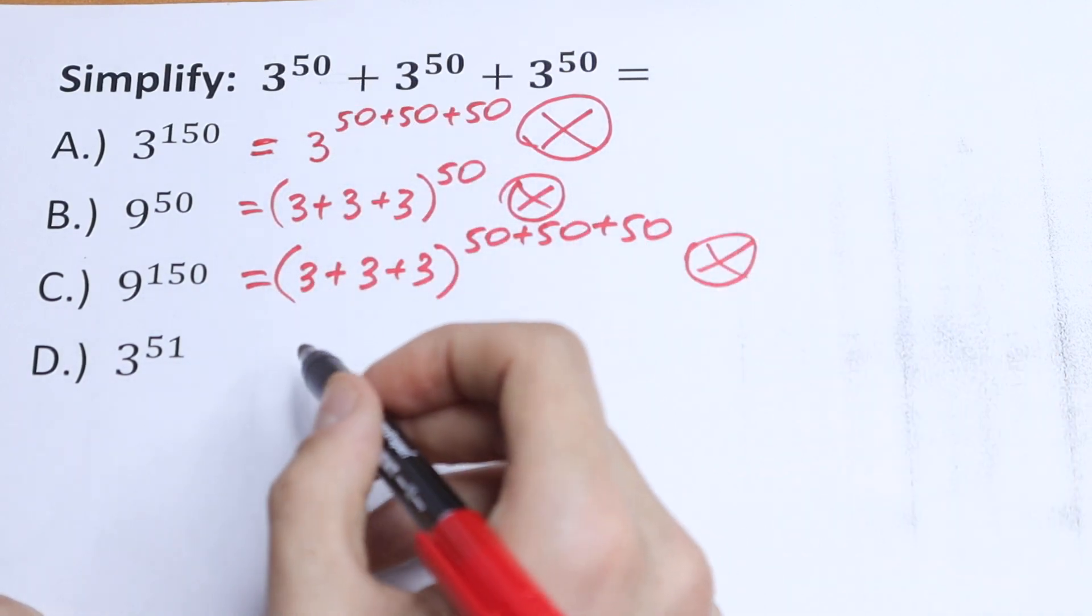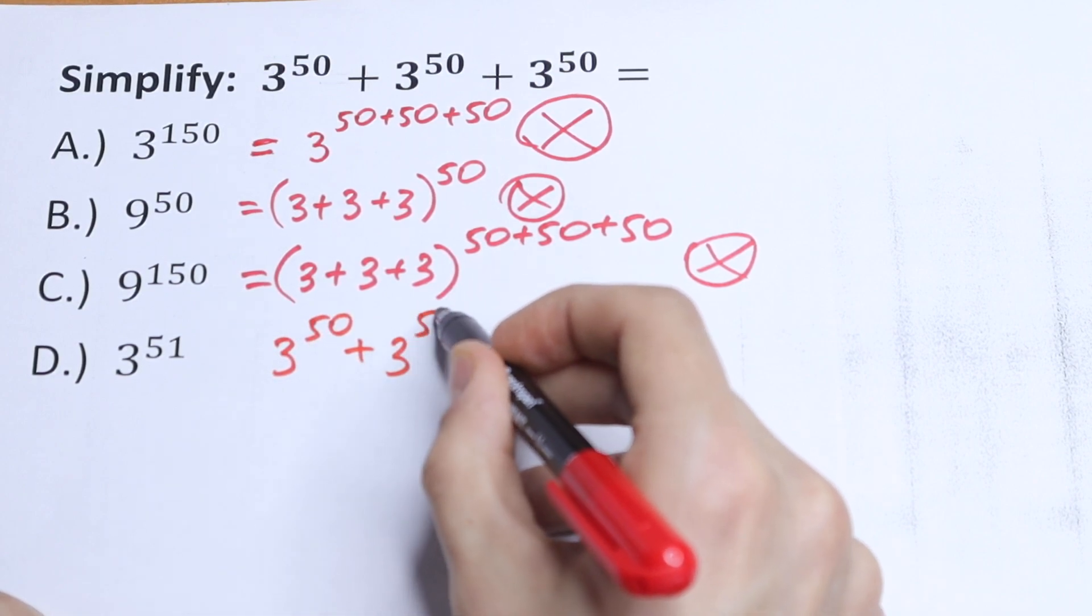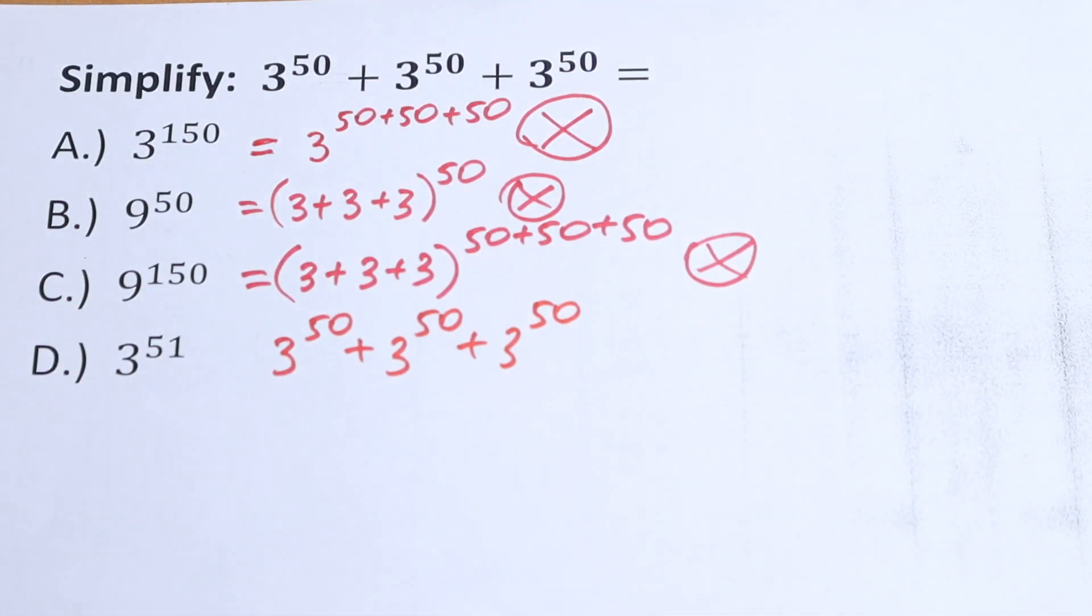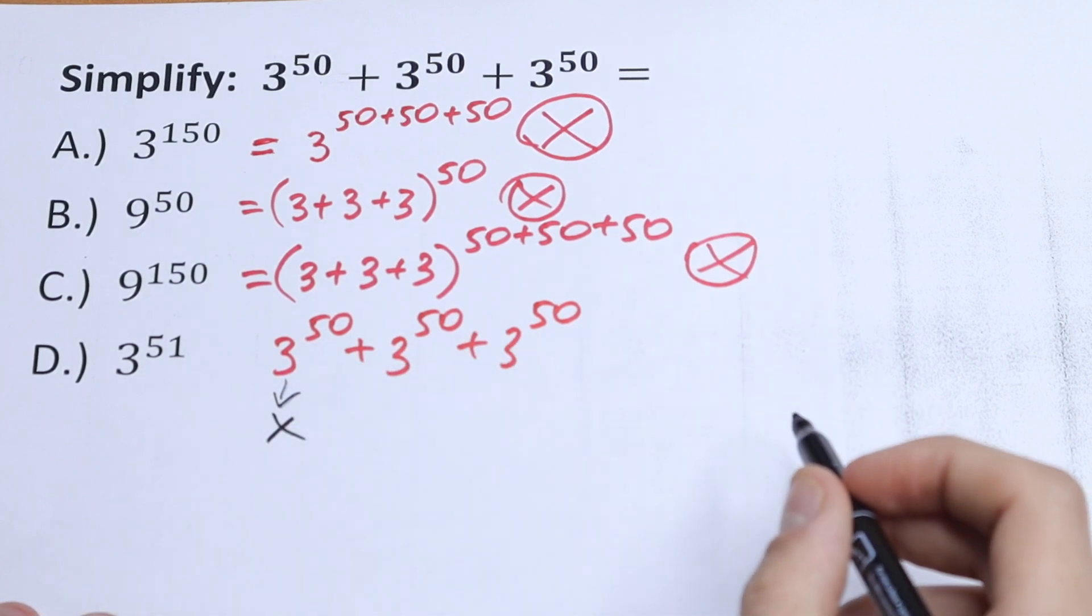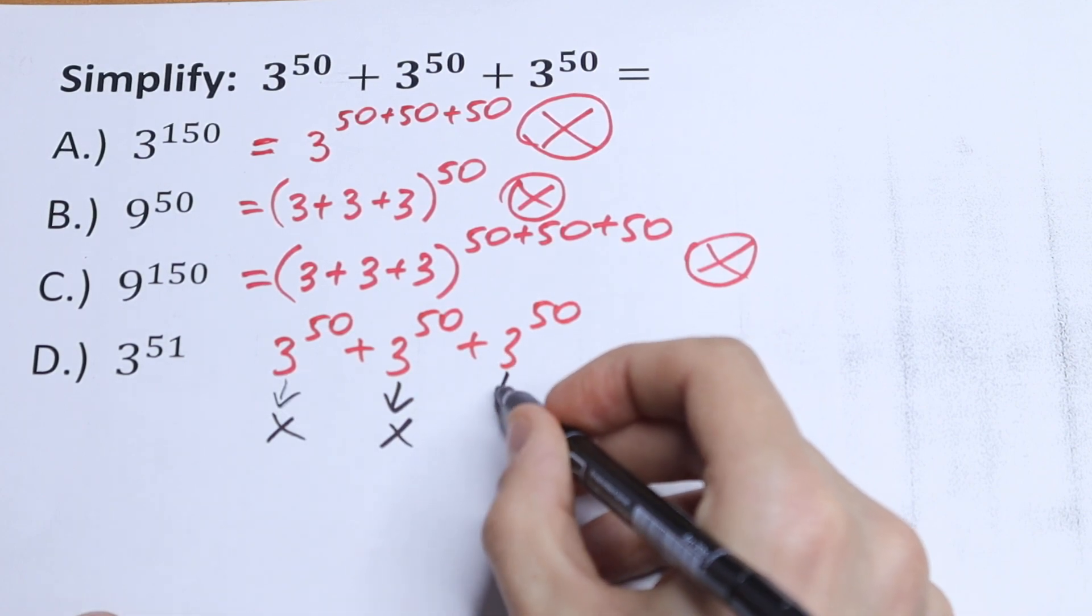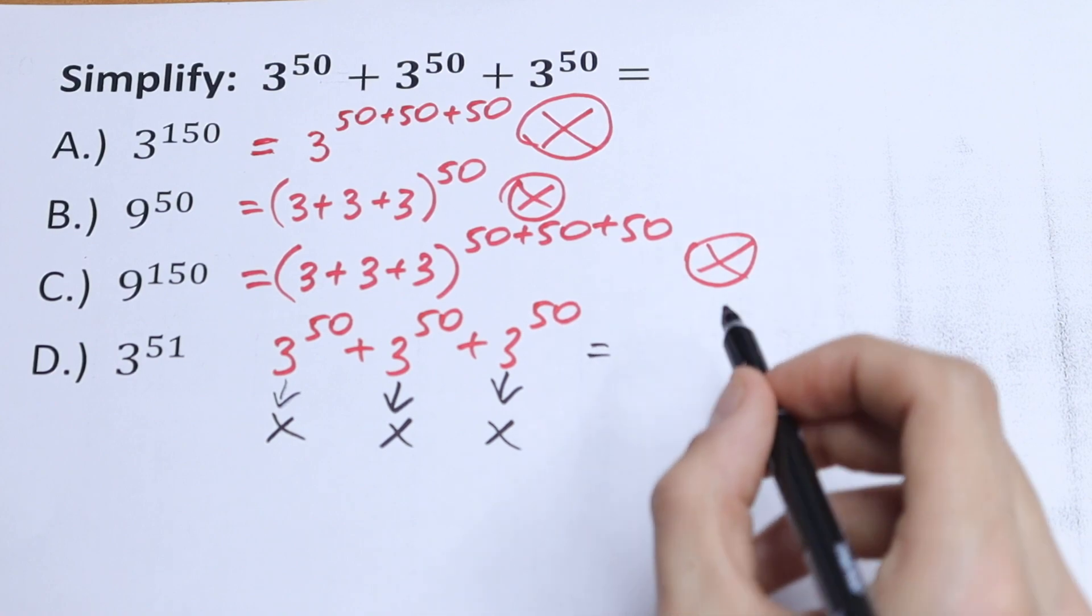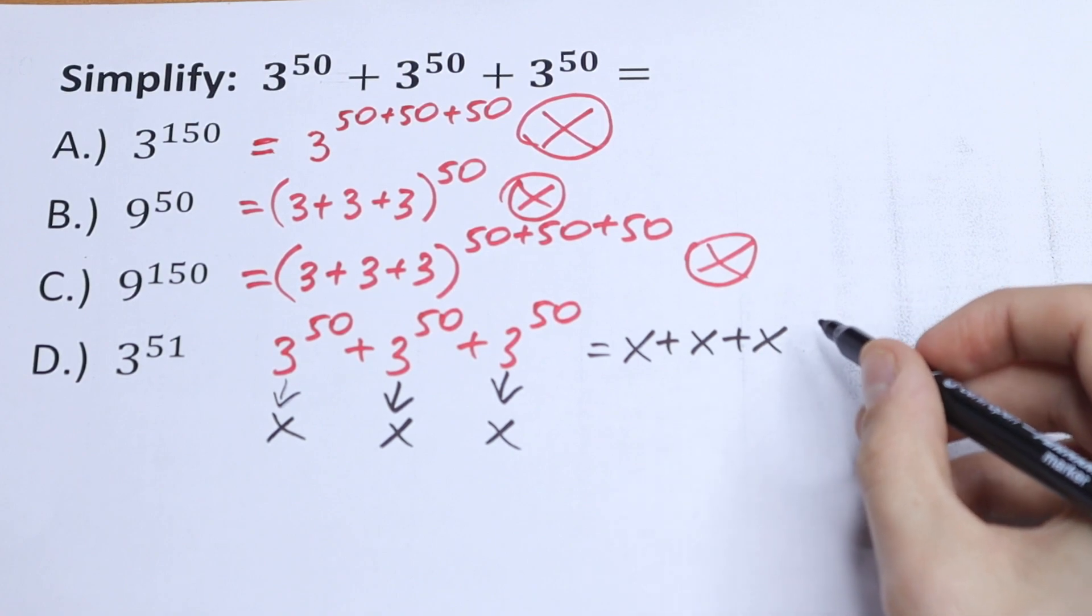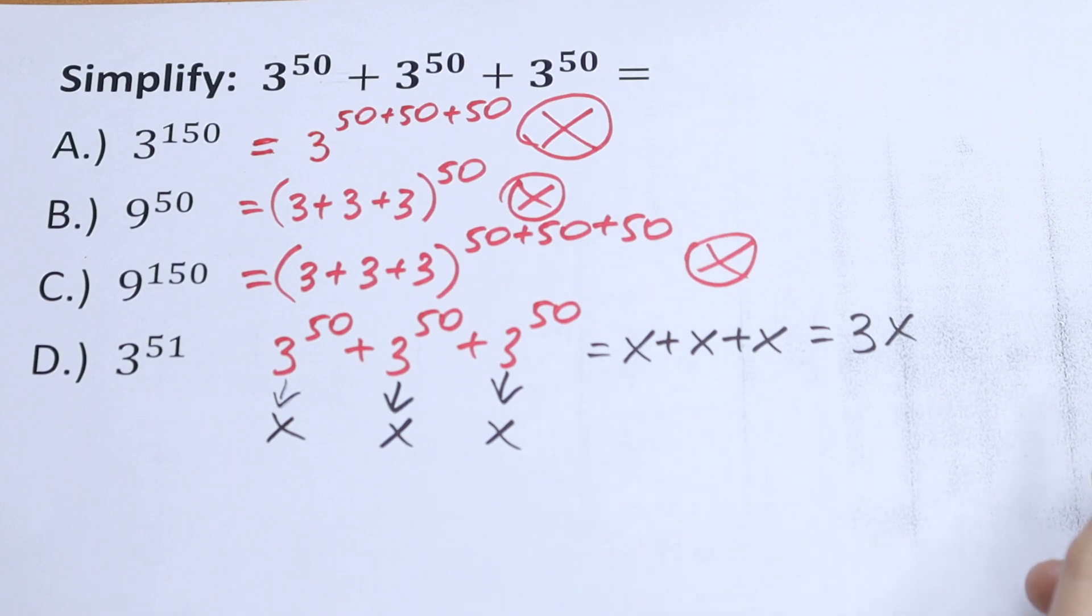Let's write 3 to the 50th power plus 3 to the 50th power plus 3 to the 50th power. These values are the same. As a result, we can write each 3 to the 50th power as x. So we will have x plus x plus x, which equals 3x.